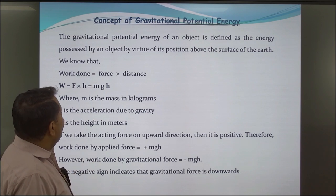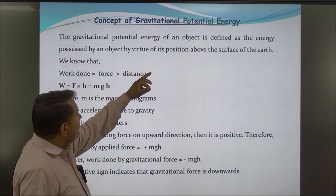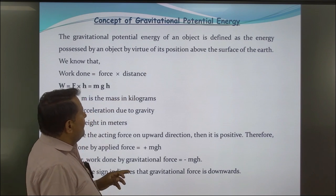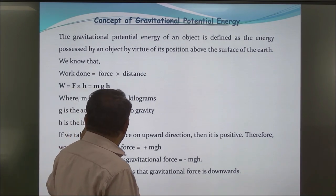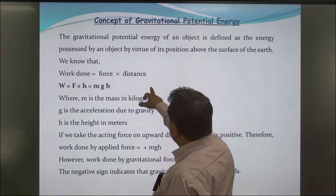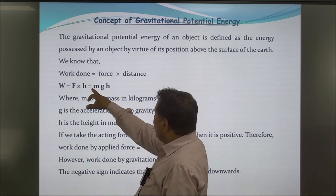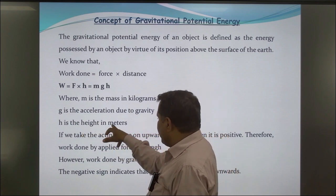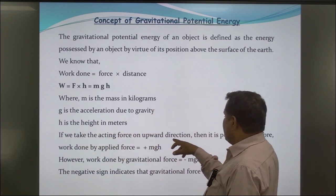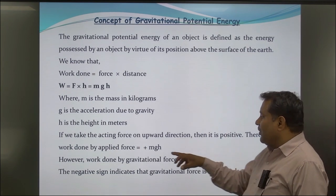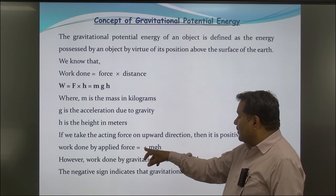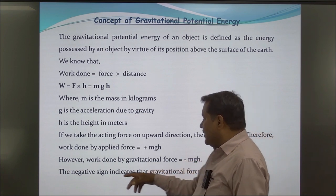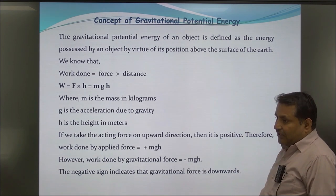Concept of Gravitational Potential Energy: The gravitational potential energy of an object is defined as the energy possessed by an object by virtue of its position above the surface of the earth. We know that work done by force: W = F × d = mgh, where m is the mass in kilogram, g is the acceleration due to gravity, and h is the height in meters. If we take the force acting in one direction, then work done by applied force equals +mgs. However, work done by gravitational force equals −mgs; the negative sign indicates that gravitational force acts downwards.